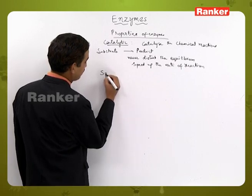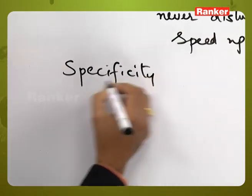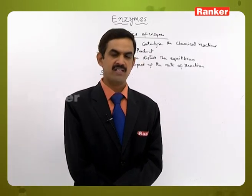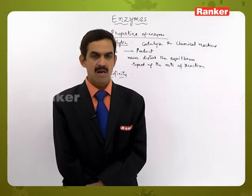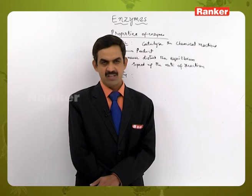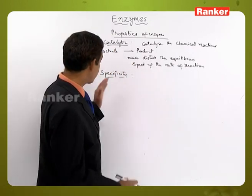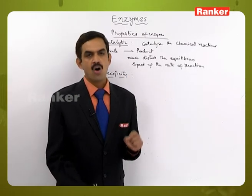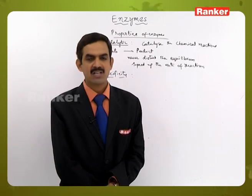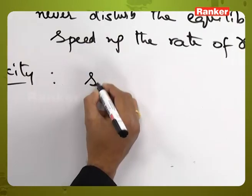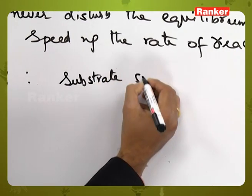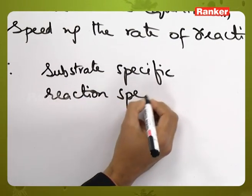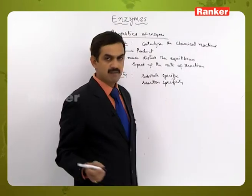Next is specificity. As we have seen in the nomenclature, the names of enzymes are sometimes related to the name of the substrate, the type of reaction, or both. This means one particular enzyme will act on that particular substrate only, or participate in that particular type of reaction only — that is substrate-specific or reaction-specific.